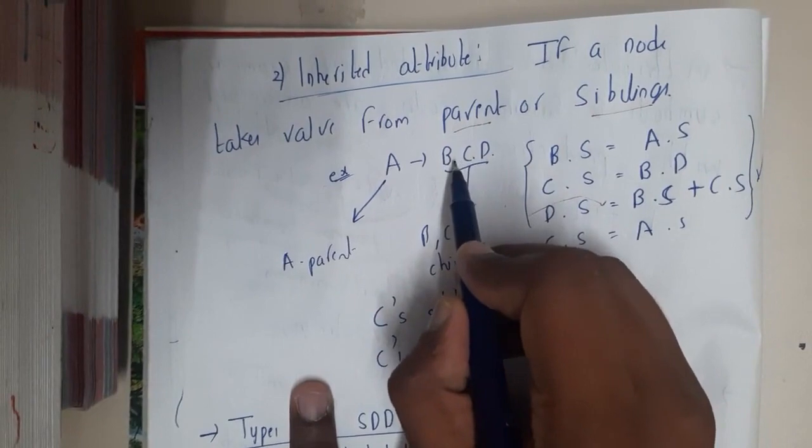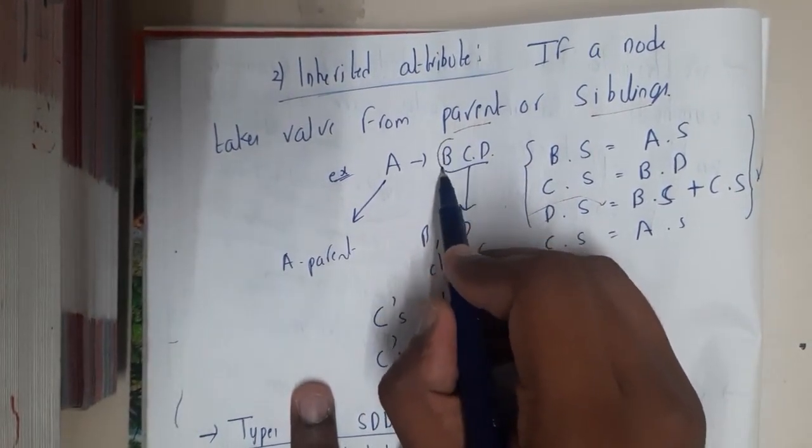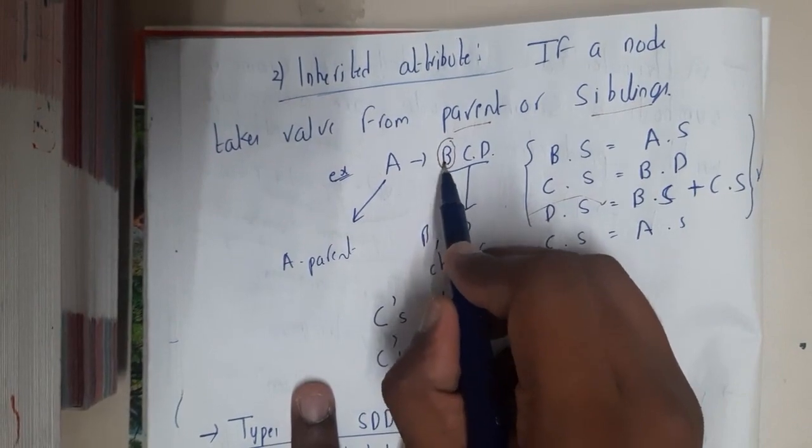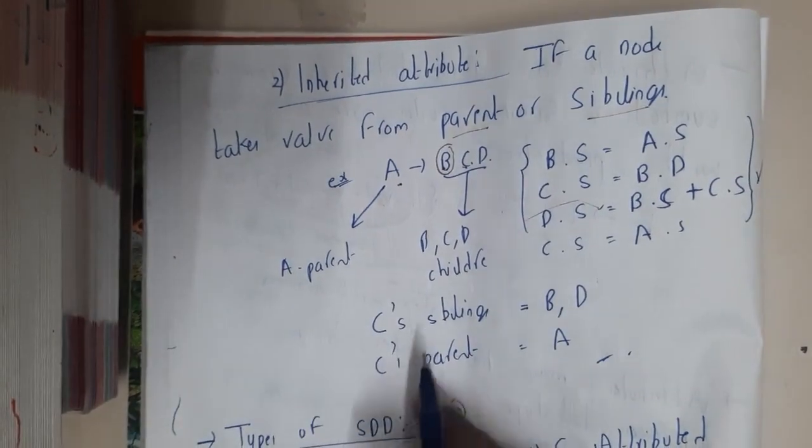So for A → B C D, values can be dependent directly on A, or if you are calculating values of B, the value of B can depend on A or C or any combination. That is nothing but inherited attribute.